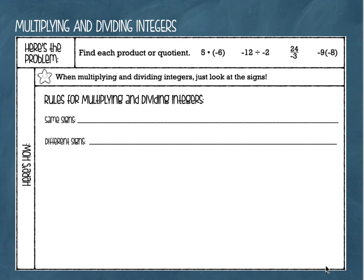Here's the problem. We are going to find each product or quotient. Remember that the product is simply the answer to a multiplication problem and the quotient is the answer to a division problem. We're going to solve these four problems. But before we do that, let's copy the rules. The rules for multiplying and dividing integers are so easy, so much easier than the rules for addition and subtraction.